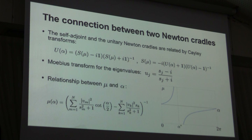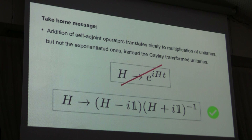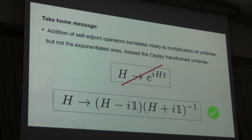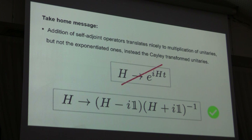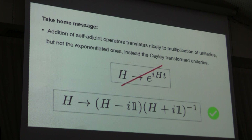An interesting take-home message: when we learn quantum mechanics, we quickly learn that addition of Hamiltonians doesn't translate nicely to multiplication of unitaries — what's standing in the way is the Campbell-Baker-Hausdorff formula. But when you relate the self-adjoint operator to the unitary operator using the Cayley transform, then the addition of a rank-one projector translates nicely to multiplication by that operator. So addition translates nicely to multiplication, only you need to use the Cayley transform.